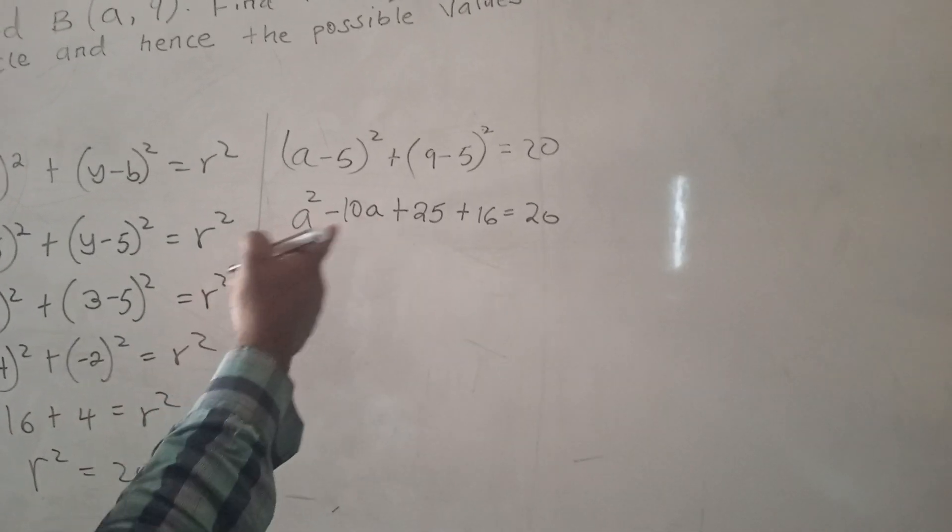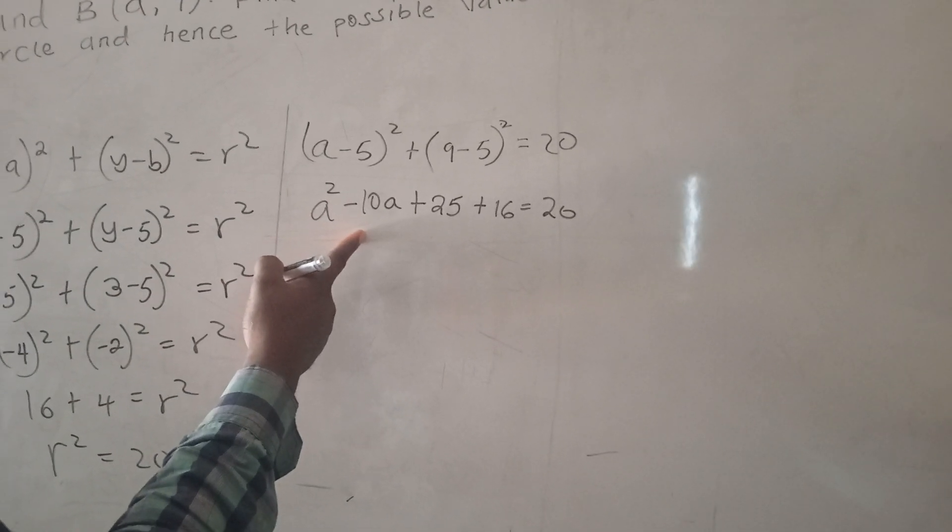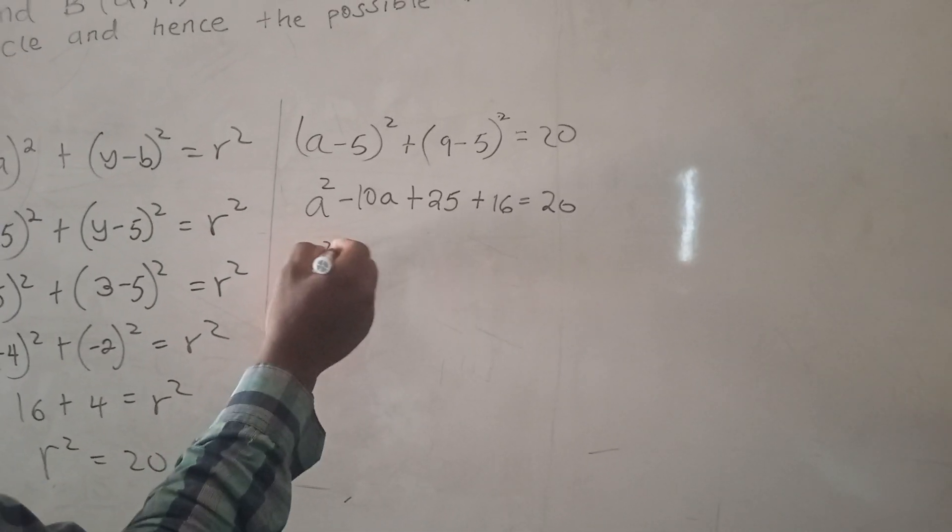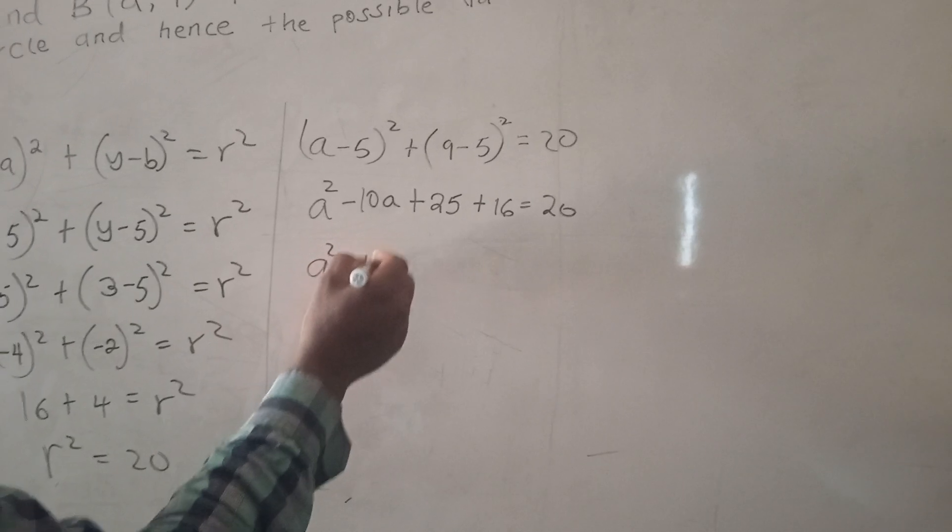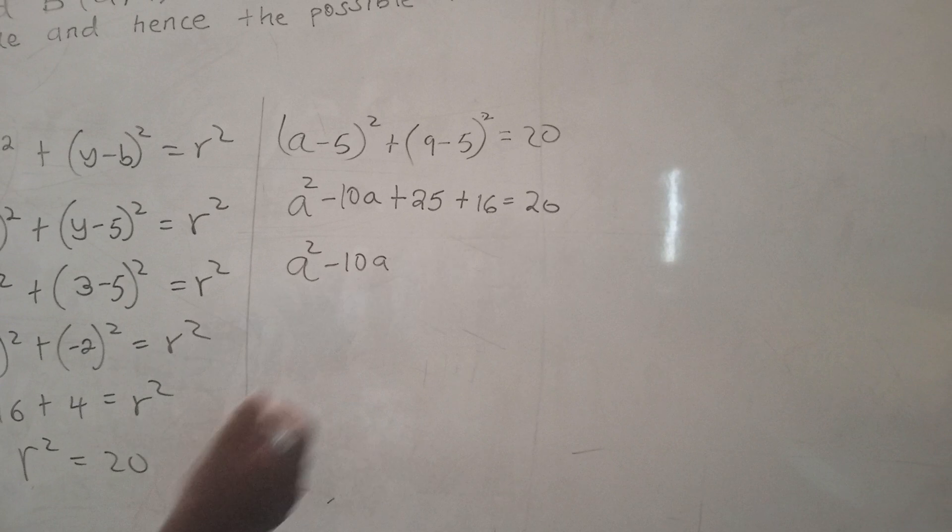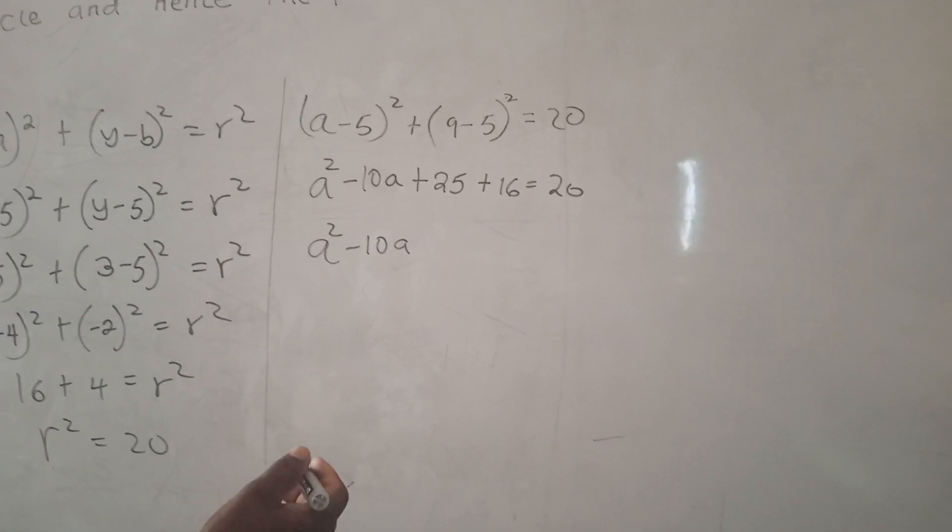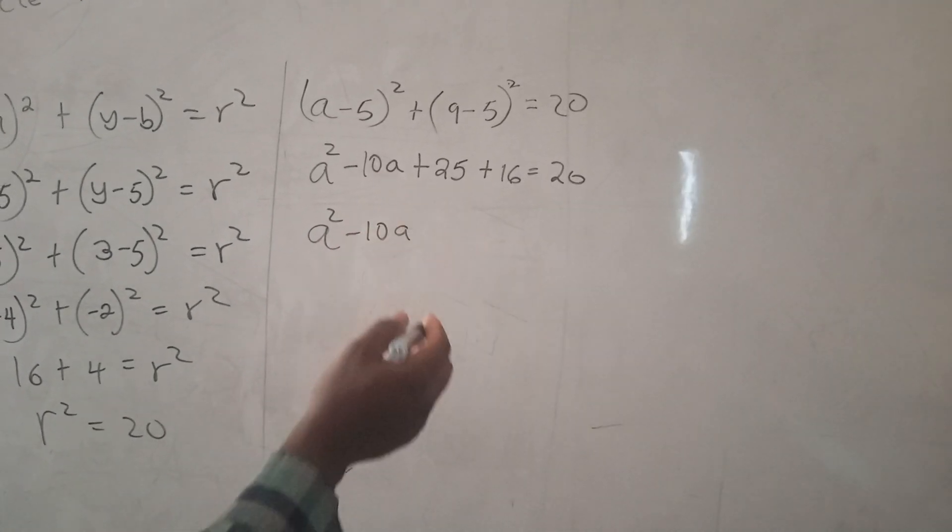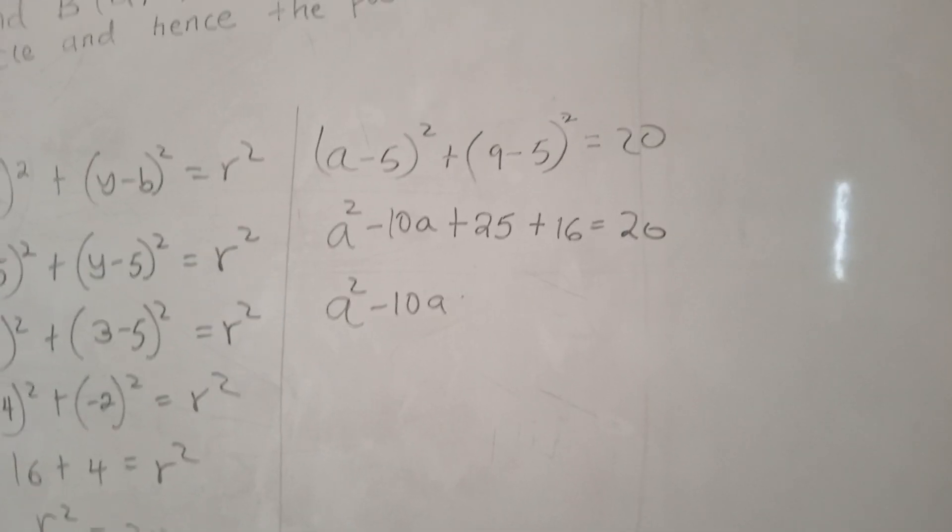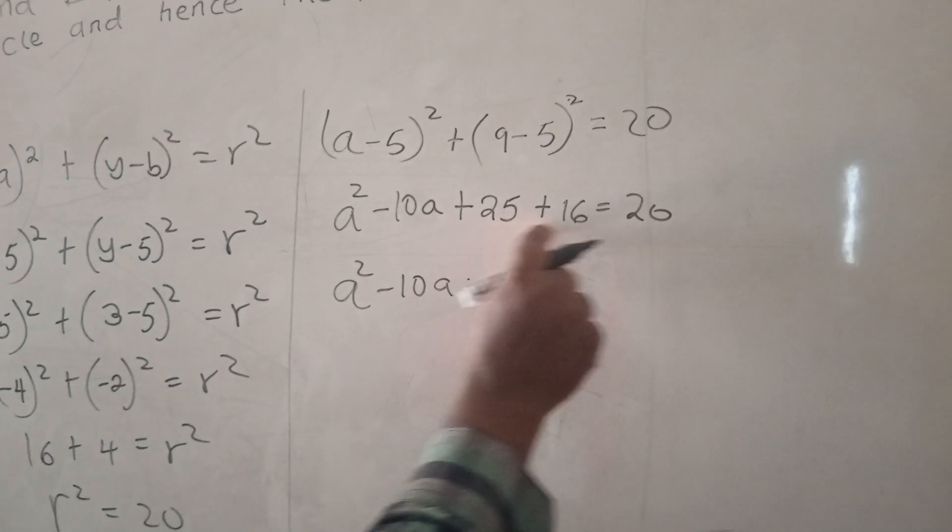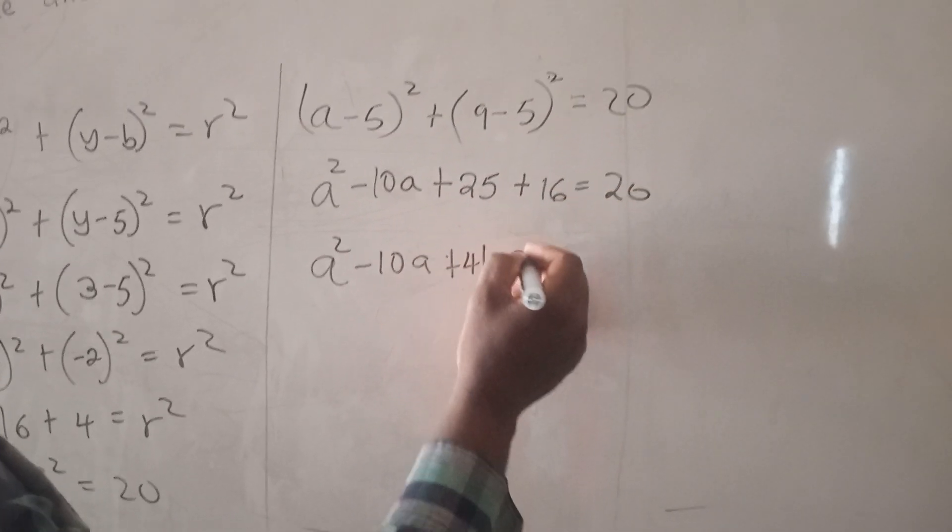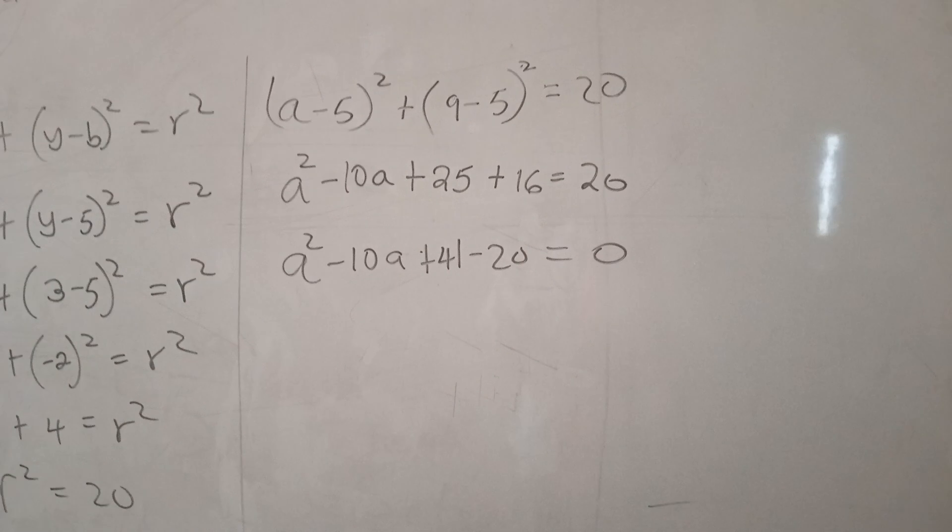Once you have this, from the look of things it looks like a quadratic equation. So this will be -10a, and here it's going to be 16. If we add this, we are going to get 41. We need to subtract 20 from that side so that we may be 0 this side.